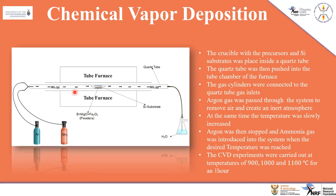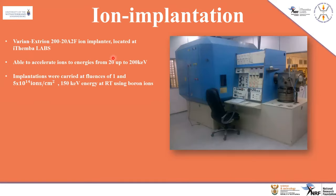The crucible was placed inside a horizontal quartz tube, which was placed inside the horizontal tube furnace. Gas cylinders were connected to the quartz tube, which was connected to a water filtration system. Temperature was slowly increased while inert gas was allowed to run through so as to create an inert environment. When the desired temperature was reached, ammonia gas was slowly introduced.